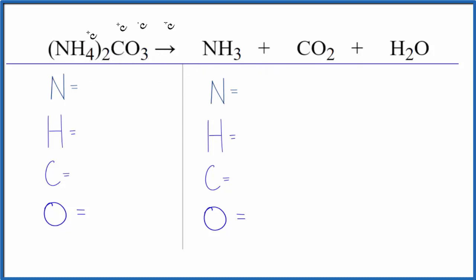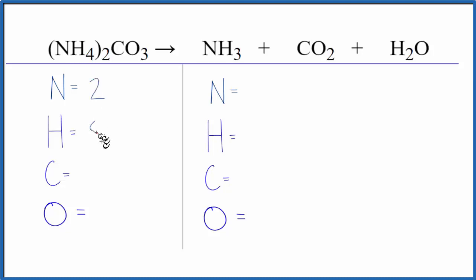So let's count the atoms up, and let's be careful here because this is a little tricky. We have one nitrogen, but the two out here in the parentheses means we have one times two — two nitrogen atoms. Two times four gives eight hydrogen, one carbon, and three oxygen atoms.